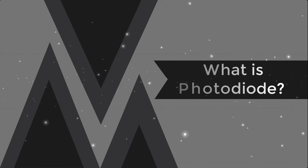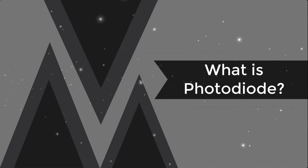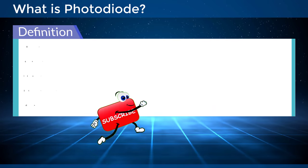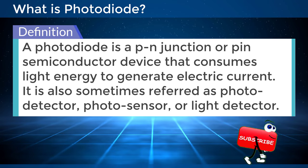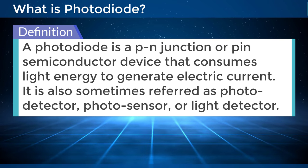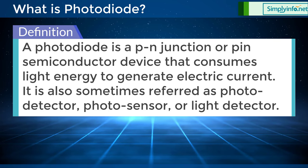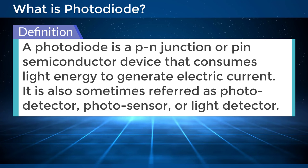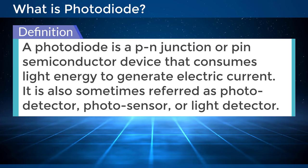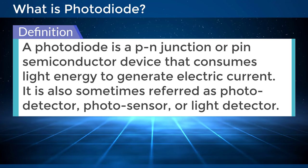What is a photodiode? A photodiode is a PN junction or PIN semiconductor device that consumes light energy to generate electric current. It is also sometimes referred to as a photodetector, photosensor, or light detector.